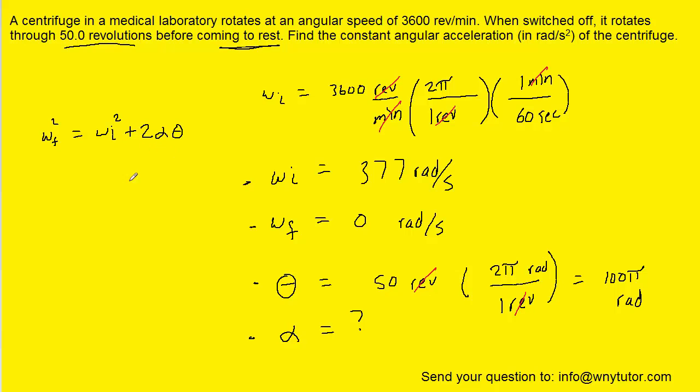And so since we're trying to solve for the angular acceleration, perhaps we can subtract the omega i squared over to the left-hand side. That's going to leave us with two alpha times theta. And then we can divide both sides of the equation by two theta. And then once we've solved that equation for the angular acceleration, we can plug in all of the known values.